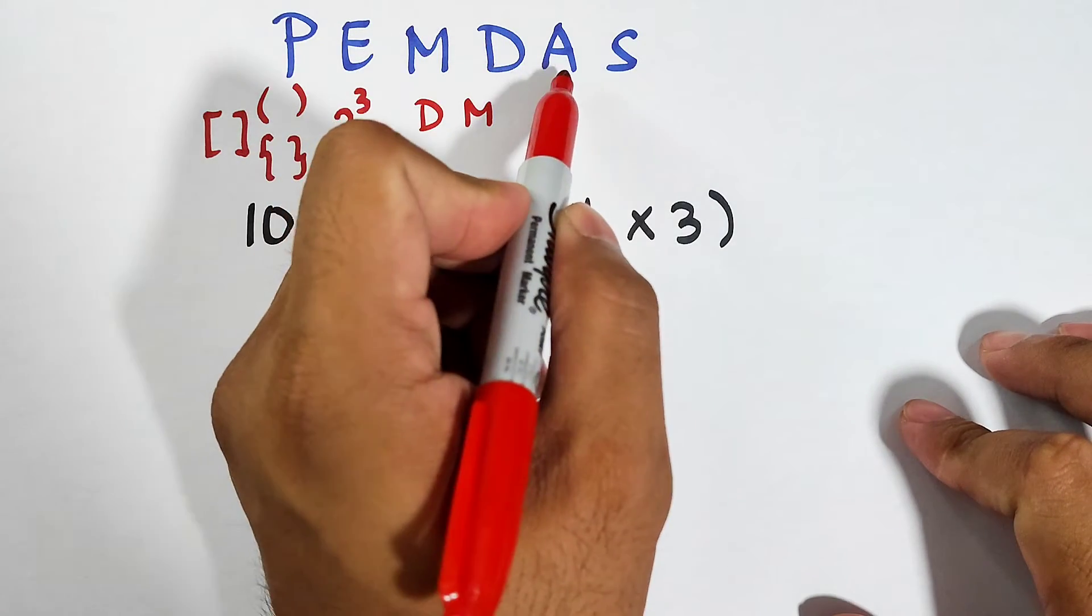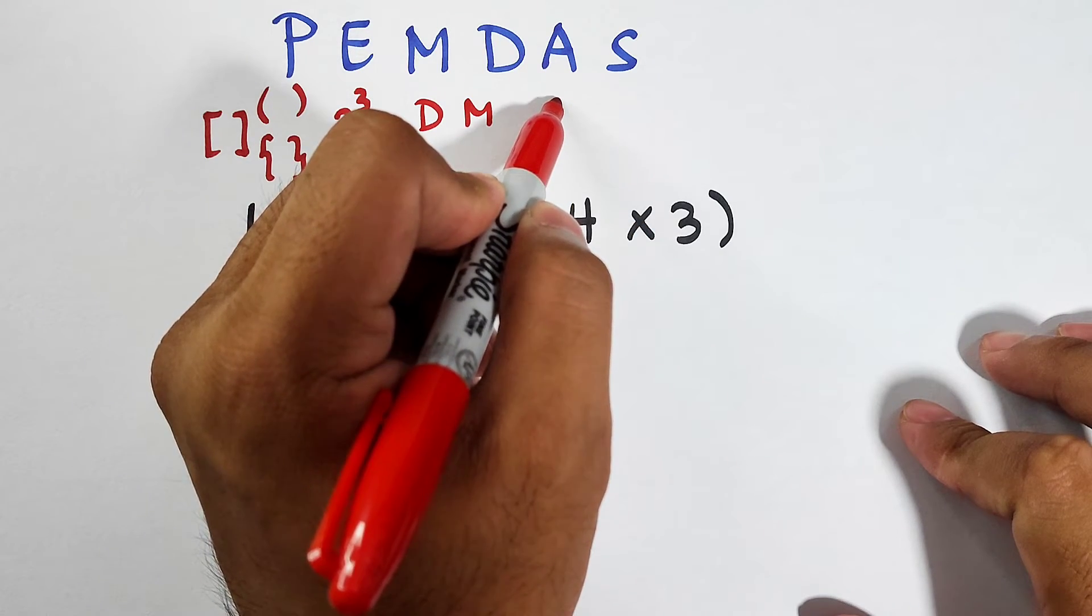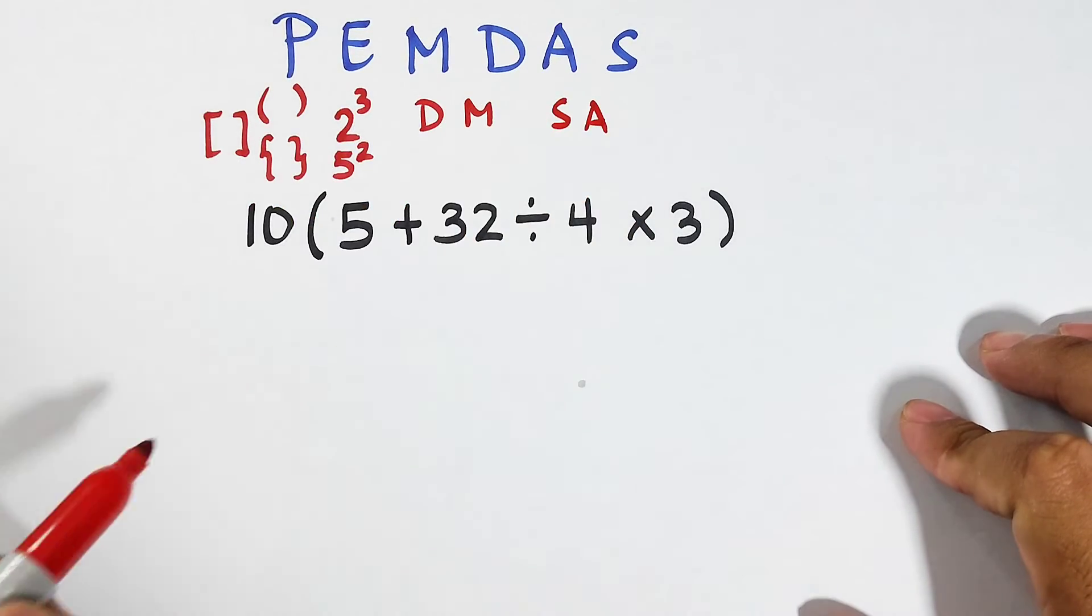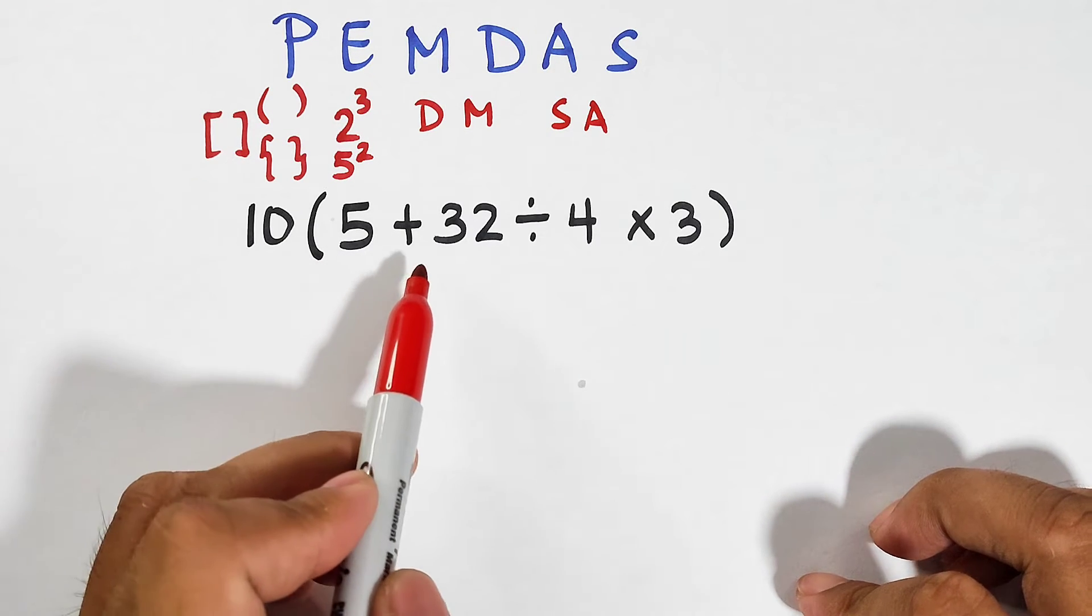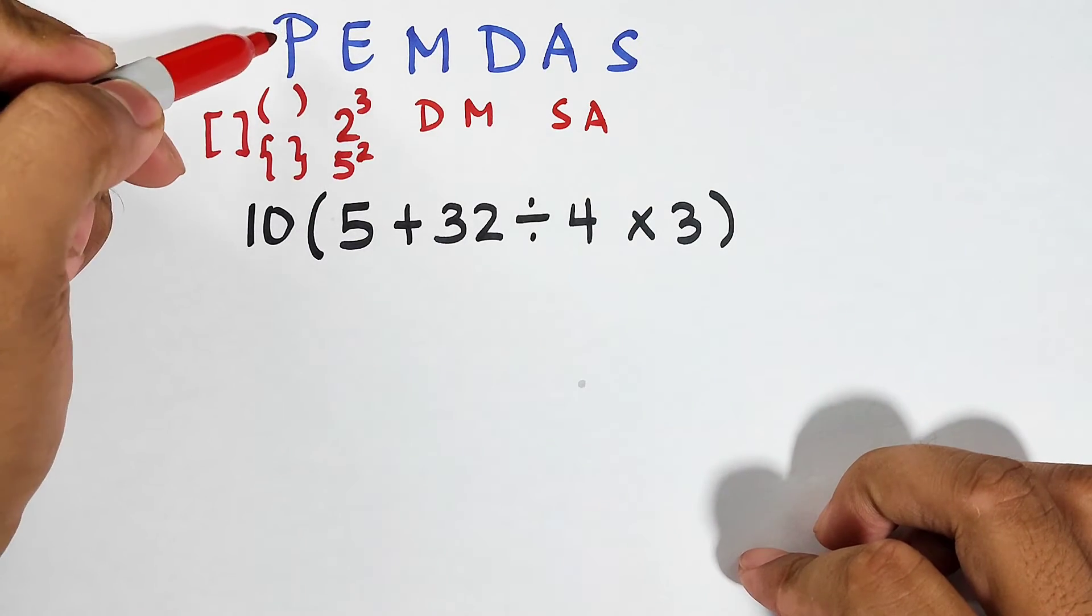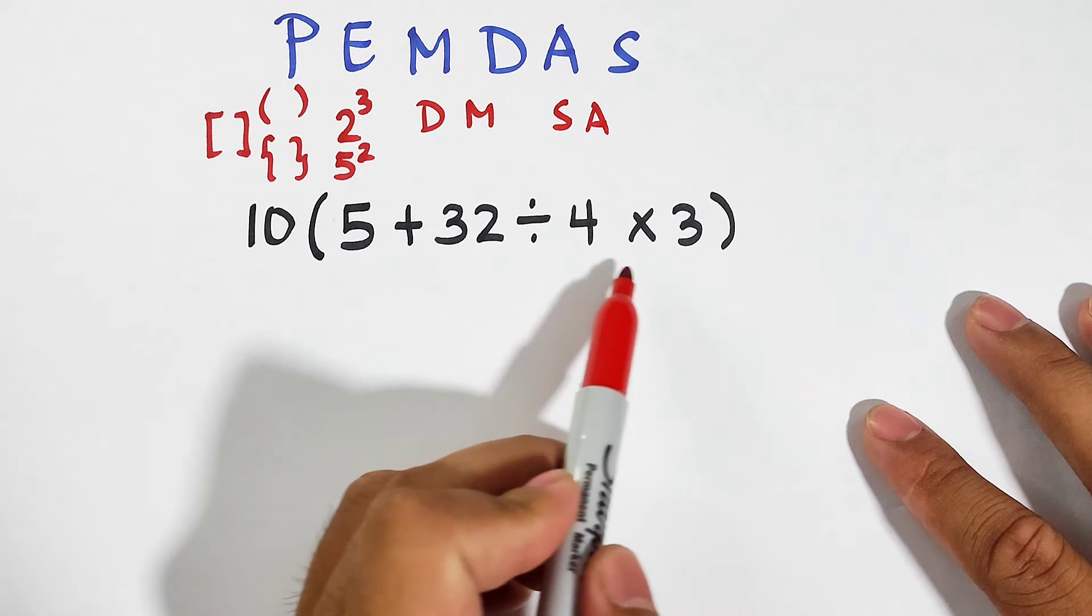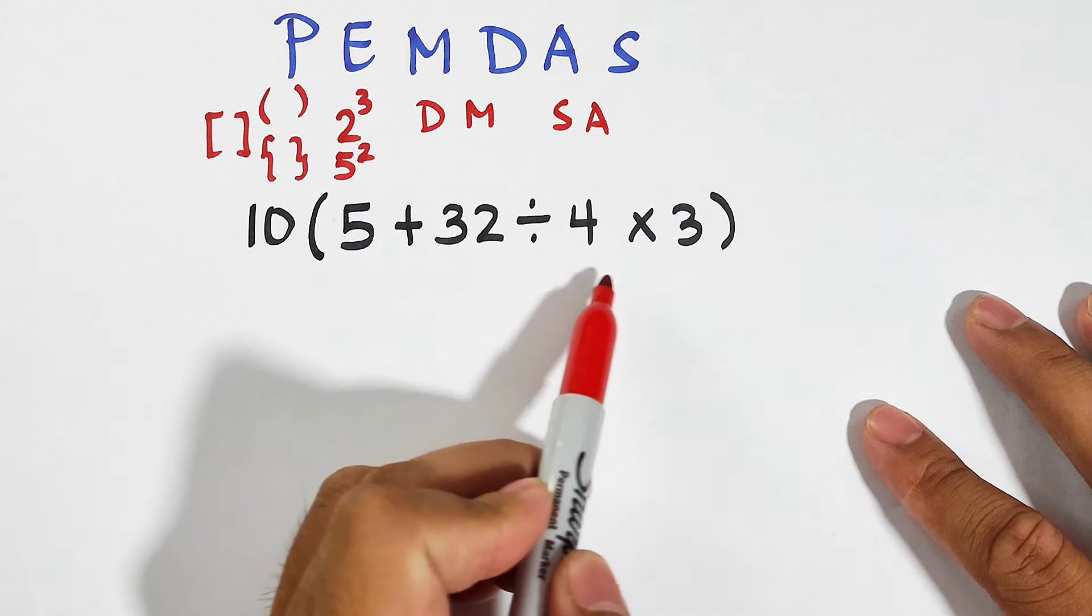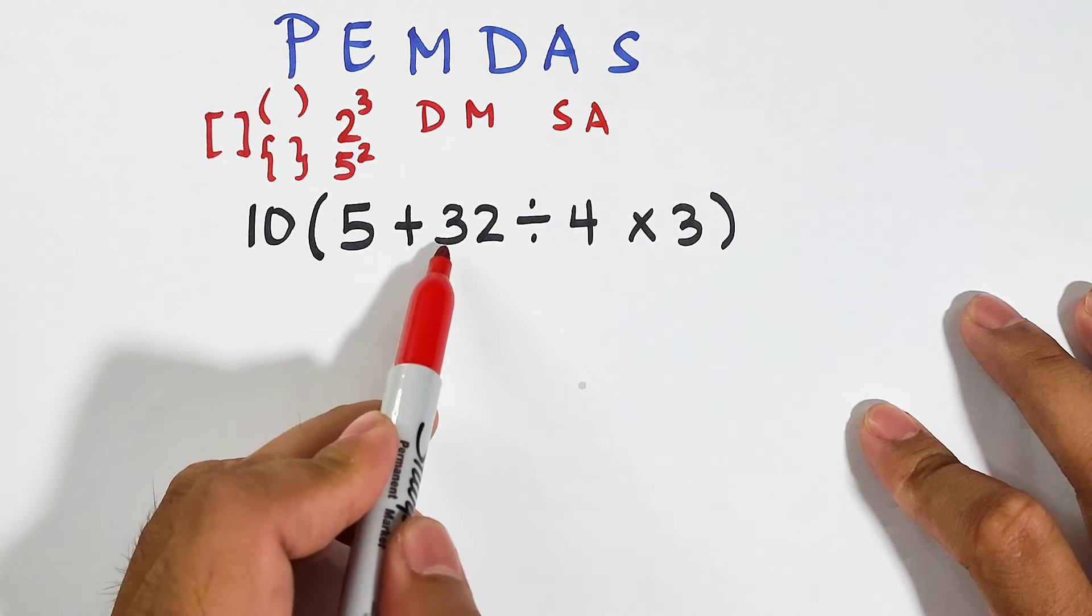Now let's go with this problem. We have 10 times (5 plus 32 divided by 4 times 3). Since we have here the parentheses, simply means that we will go first and simplify the operations inside the parentheses. Now we have 5 plus 32 divided by 4 times 3.